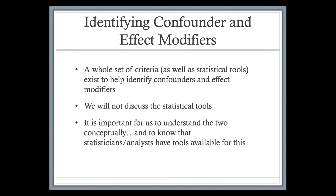It's important to mention that there's a whole set of criteria and statistical tools that can be used to help identify confounders and effect modifiers — beyond just the concept, there are statistical approaches to identifying them and testing if an effect modifier is statistically significant. We're not going to discuss these tools; you're not expected to implement them. It's just important to understand conceptually what confounding and effect modification are, and to know that tools are available to a statistician or analyst to test for them.